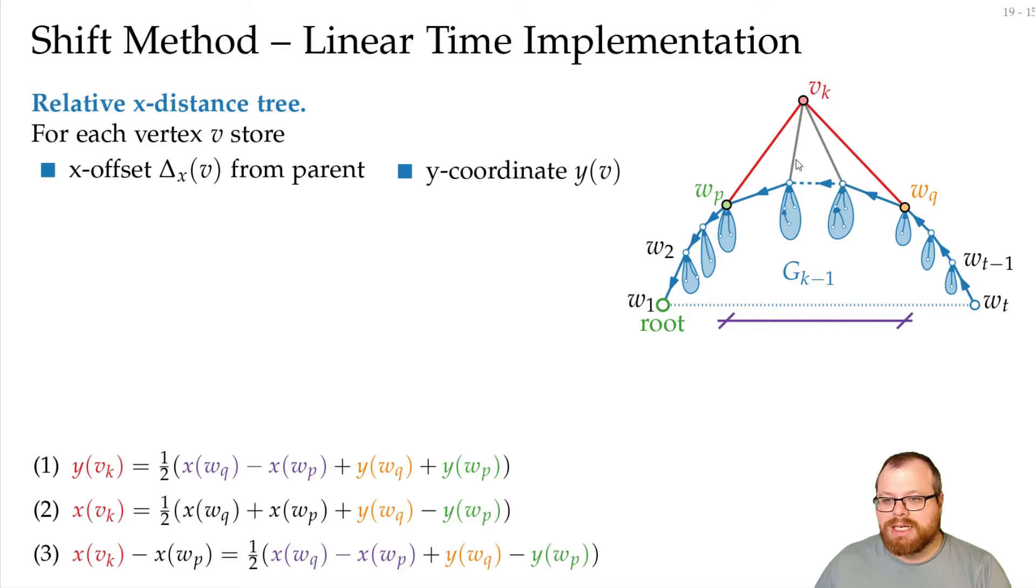We first take these in the middle and shift them to the right by 1. So this distance from this vertex here to this one gets increased by 1. And all these here, they get shifted by 2. So the distance from here to here is also increased by 1.